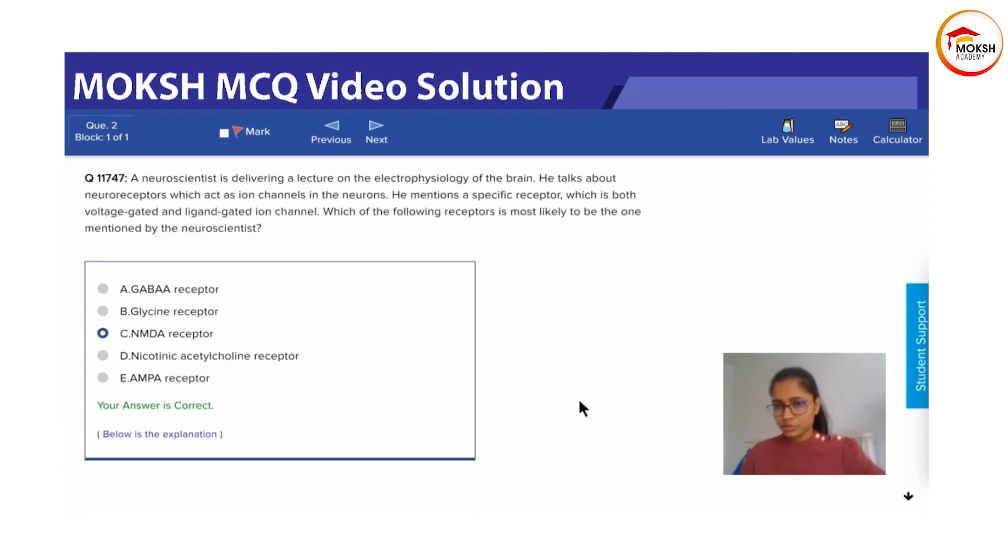Our ligand-gated examples would be nicotinic acetylcholine receptors, AMPA receptors, and GABA-A receptors. These all need a ligand to bind to them for them to open and close.